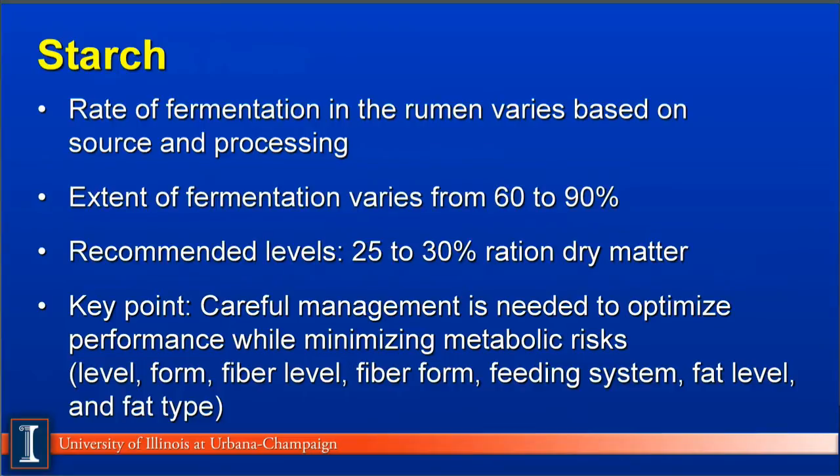Another fraction is the starch fraction. The rate of fermentation in the rumen will vary depending on its source and how we process the starch. Also, the extent of fermentation of starch in the rumen varies from 60% for sorghum and corn to as high as 90% for wheat and barley. The recommended level of starch in the high-producing dairy cow ration will vary from 25% to 30% depending on other ration factors. Careful management is needed to optimize rumen performance and fermentation while avoiding metabolic risks and acidosis. Such things to manage will be the level of starch, its form, the fiber level, the fiber form, the feeding system, fat level, and fat type.